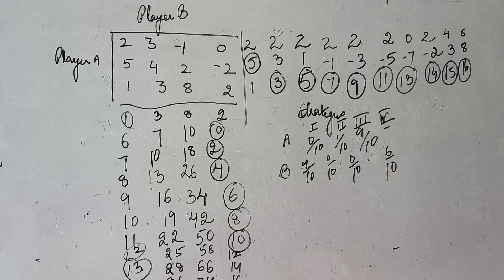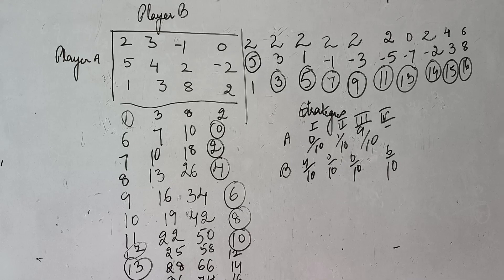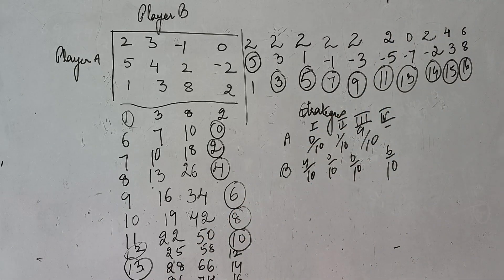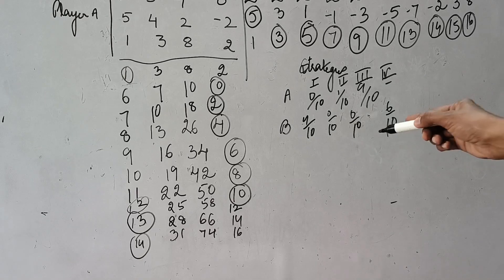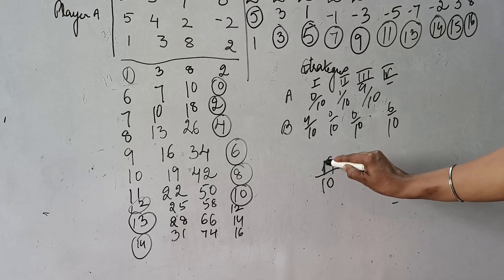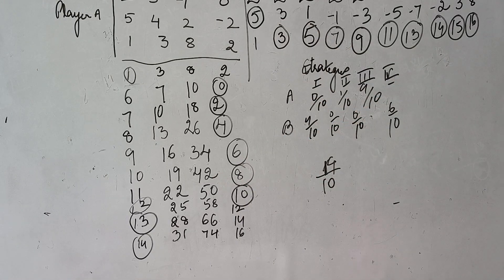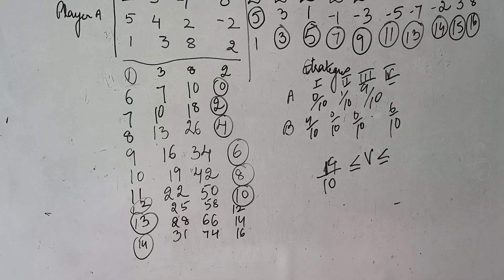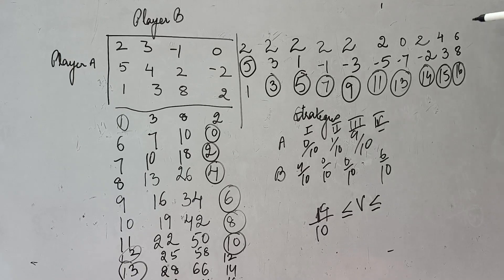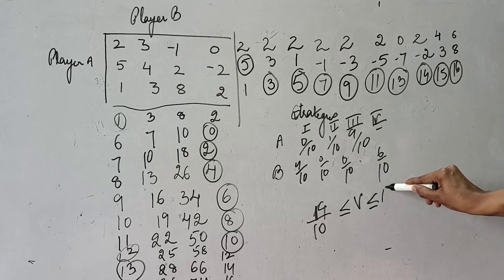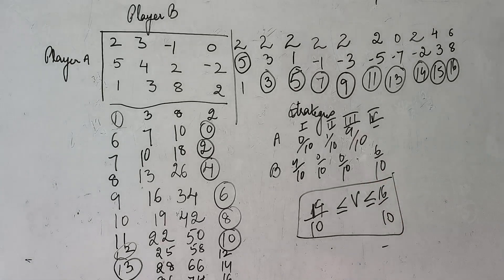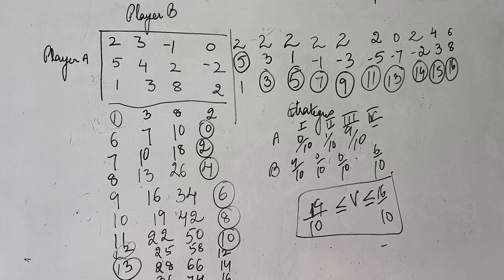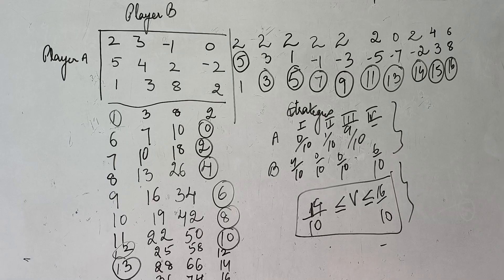Just count the circles to get the strategies. For the value of game, observe the last circle. The last row has a circled element of 14, so you write 14/10 as the lower bound. Then look at the last column — the circled element is 16 — so you write 16/10 as the upper bound. The value of game lies between 14/10 and 16/10. This is the approximate value; there is no fixed value. This is how the approximation method shows strategies as well as the value of game.